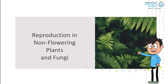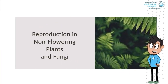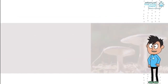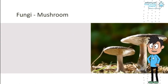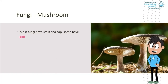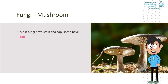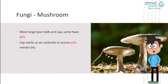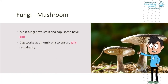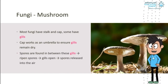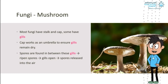Now, let's explore how reproduction occurs in non-flowering plants and fungi in detail. We will look at mushrooms, which are fungi. Most fungi have a stalk and cap, and some have gills. The cap works as an umbrella to ensure that the gills remain dry. Spores are found between these gills. When the spores are ripe, the gills open and spores are released into the air.